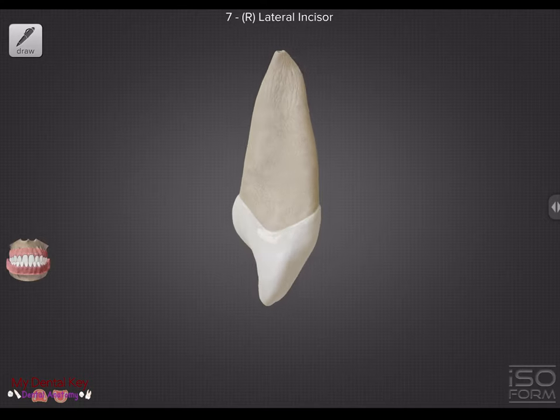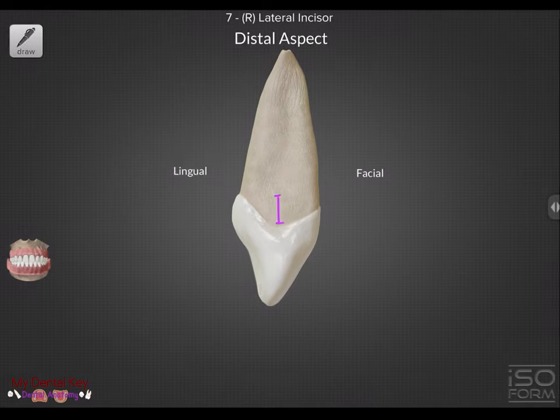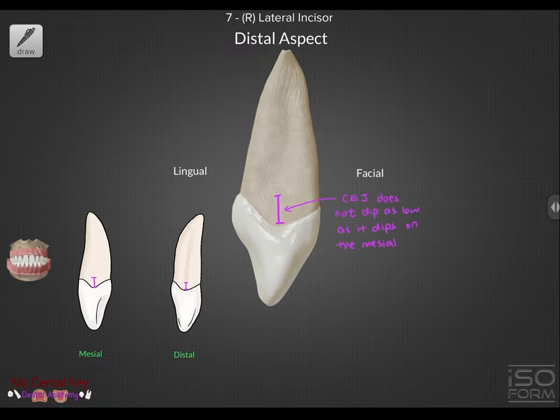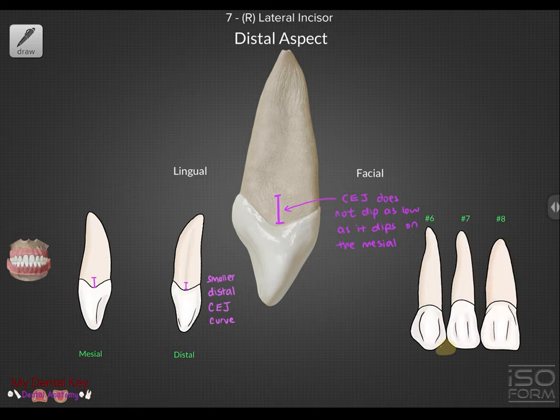Looking at the distal, you can see the CEJ doesn't dip as low as it did on the mesial. The distal also has the largest anterior embrasure.